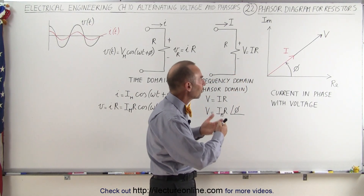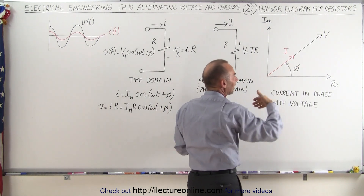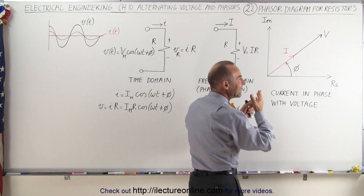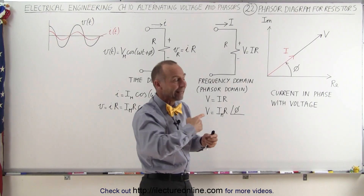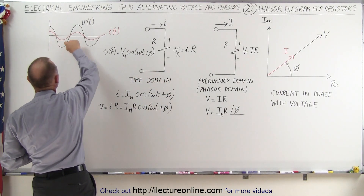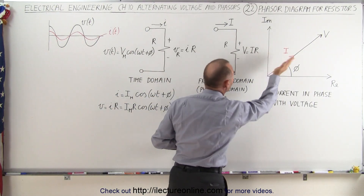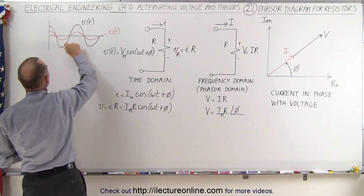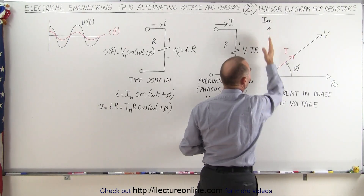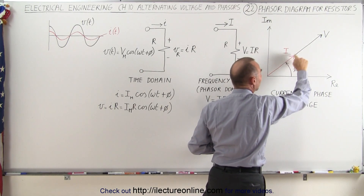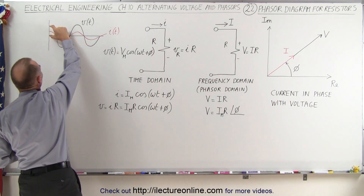What do we mean by the current direction and the voltage direction? The direction of the current and the voltage, as shown with these arrows, is simply a result of what the time-phase position is for the voltage and the current. Since the voltage and the current are always varying as a function of time, the direction of the arrows represents the physical position here on this diagram. This is the real axis and this is the imaginary axis.